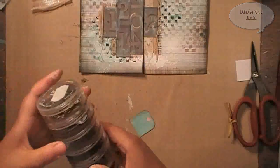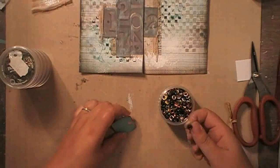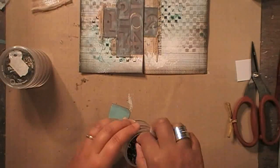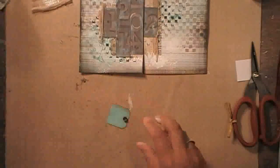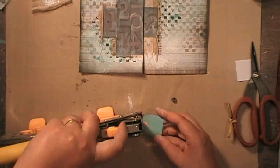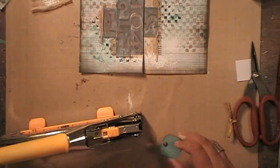Cutting up a little 7gypsies tag, and to add a metal touch to the spread, I'm adding a rusted eyelet, and to do so I'm using my big bite.